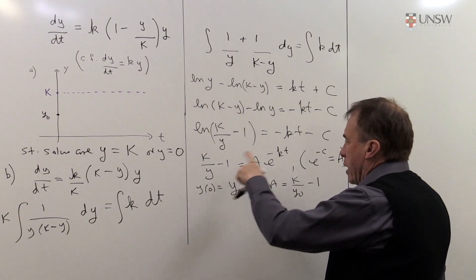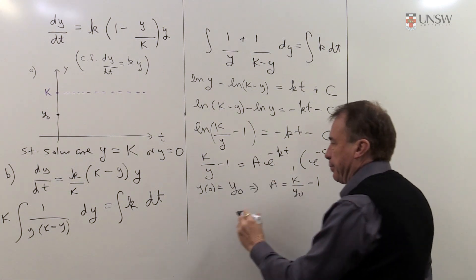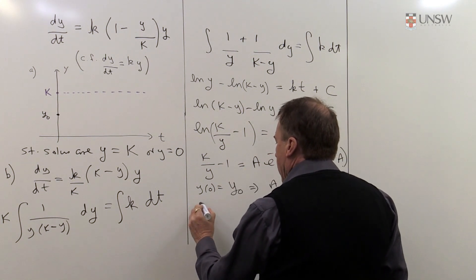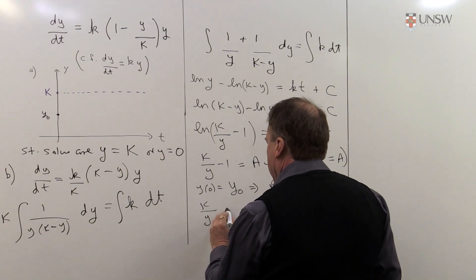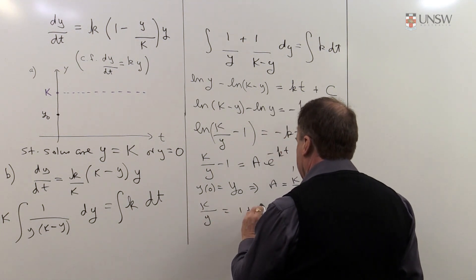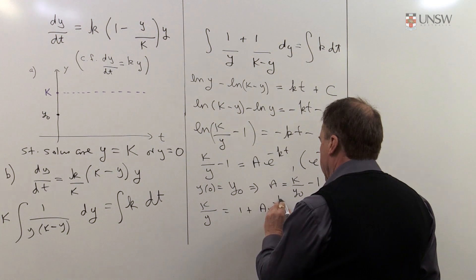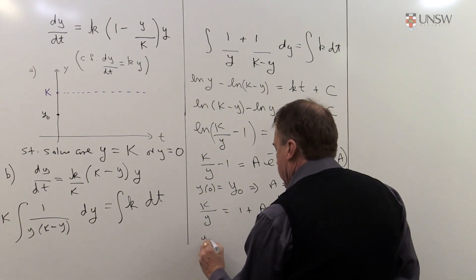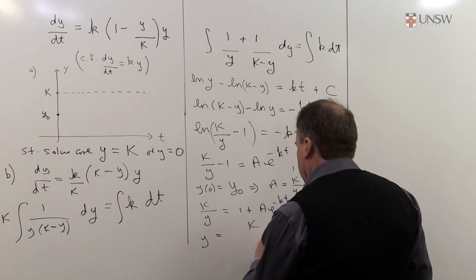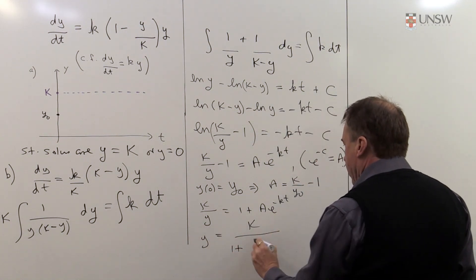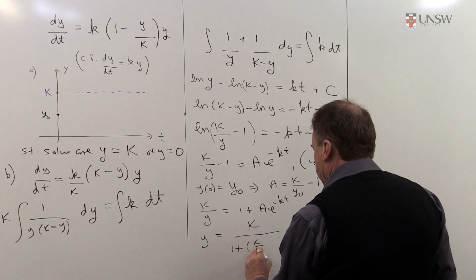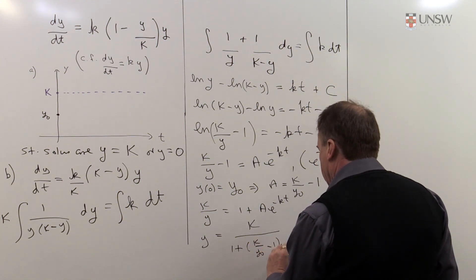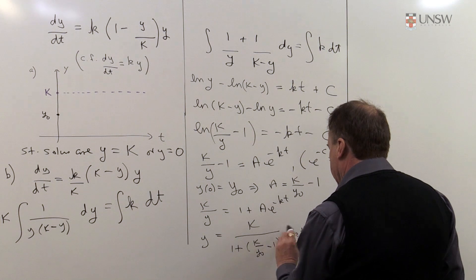So we're going to plug that, we'd like to get y the subject of this, so I can write k over y equals 1 plus, I'll leave it as a for the moment, e to the minus kt, and now I want to get y the subject, so I'll just invert it and then multiply across. So I'll get 1 plus, and remember a was k over y_0 minus 1 times e to the minus kt.